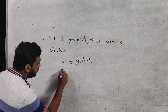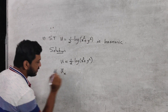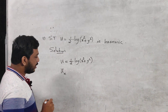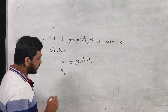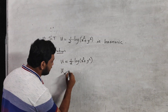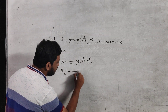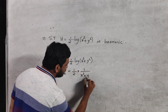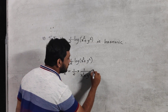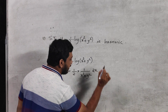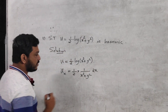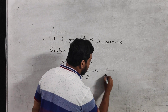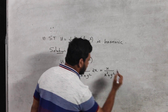Computing the first order partial derivative ux = ∂u/∂x: we differentiate u partially with respect to x, treating y as constant. That gives ½ × (1/(x²+y²)) × 2x, so ux = x / (x² + y²).